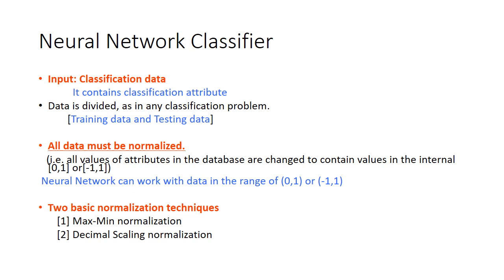Your classification attribute should be present in your data. Then we will divide the dataset into two categories: the first part is training data and the second is testing data. Training data is used to build a model from the data — we know what the attributes are and what the decision class is. Testing data is used to test the model. Both are divided in some ratio decided by the researcher.